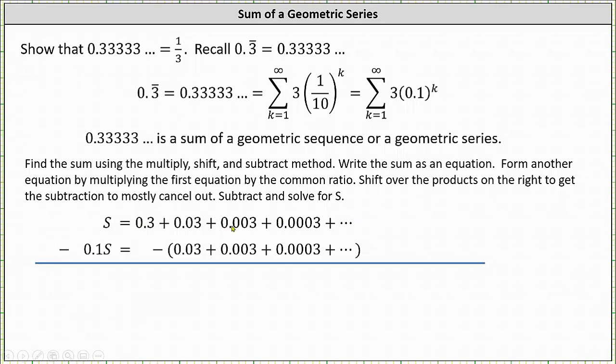And then to form the second equation, we multiply the first equation by the common ratio of 0.1 or 1 tenth, and then we subtract. Multiplying, 0.1 times s gives us 0.1s. And then on the right, 0.1 times 0.3 gives us 0.03. Notice how this is shifted right.